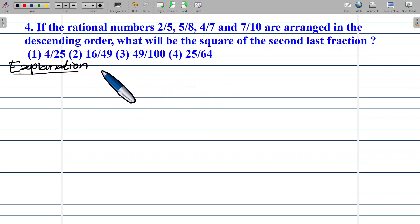The rational numbers are 2 upon 5, 5 upon 8, 4 upon 7, and 7 upon 10. To compare these fractions, we can observe the difference between the numerator and denominator in each case.